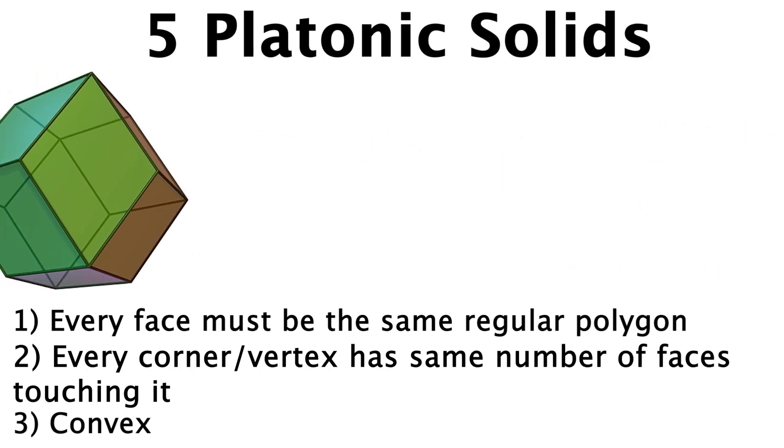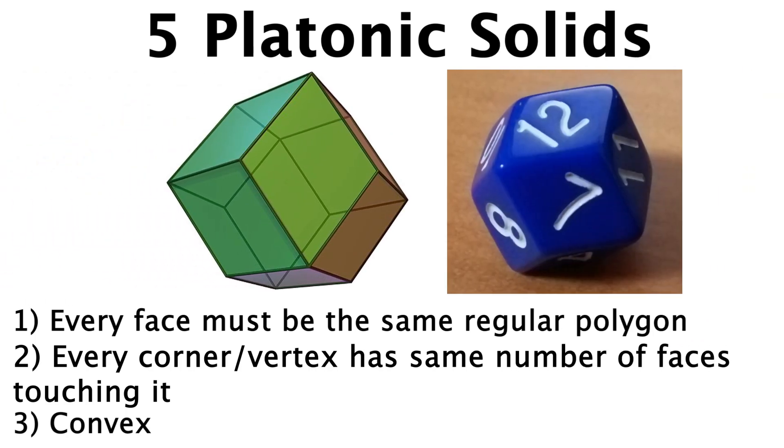So the rhombic dodecahedron for example could be a fair die, but as we can see three faces meet at this corner while four meet at this one. So it doesn't satisfy the conditions as listed which is really what we're going off of.